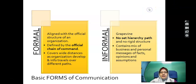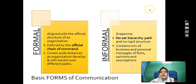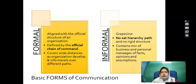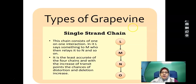Formal communication is aligned with the official structure of an organisation, defined by the official chain of command, covering wide distances as the organisation develops. Informal communication is called the grapevine — there is no set hierarchy path and no rigid structure.